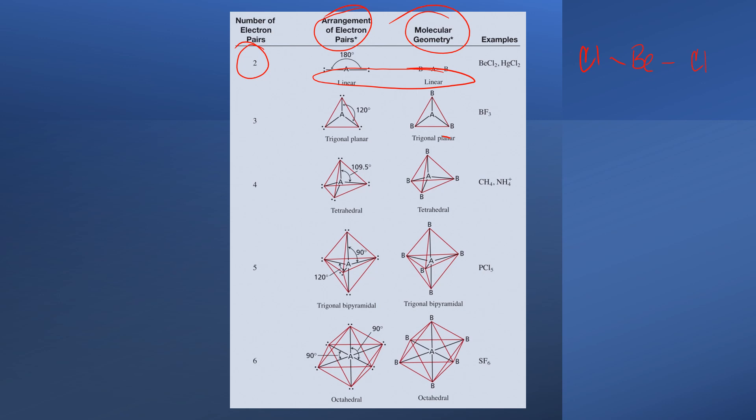Next up, we have a central atom with three atoms bonded to it, something like BF3. Again, I'm going to omit lone pairs around fluorine for simplicity because we are looking at boron. Boron is going to have trigonal planar geometry.